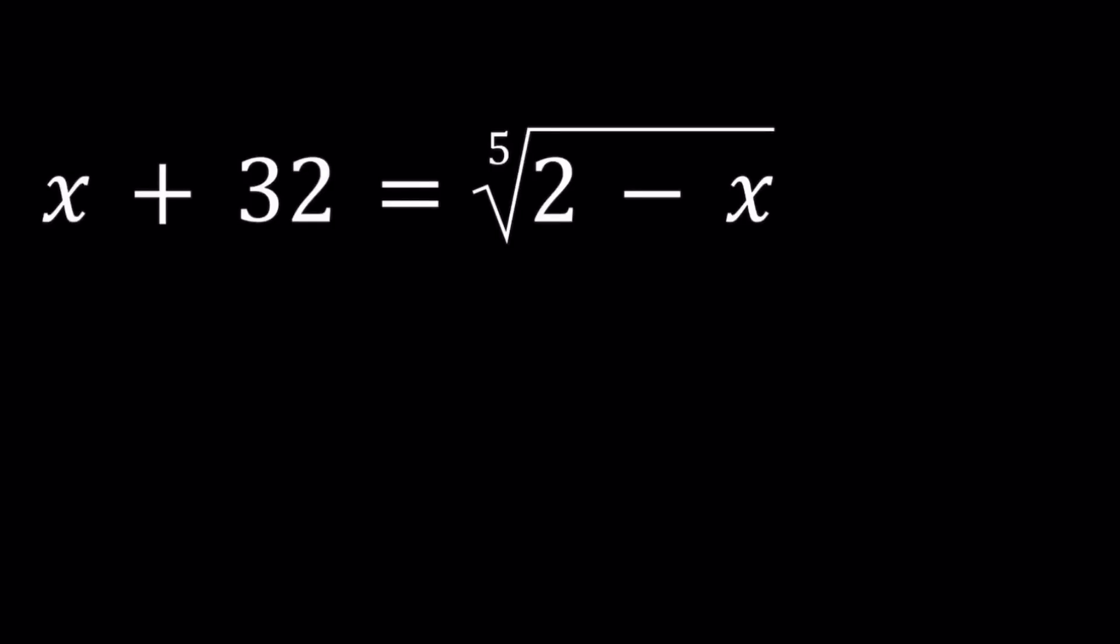Hello everyone, in this video we're going to be solving a radical equation. We have x plus 32 equals the fifth root of 2 minus x, and we're going to be solving for x values.